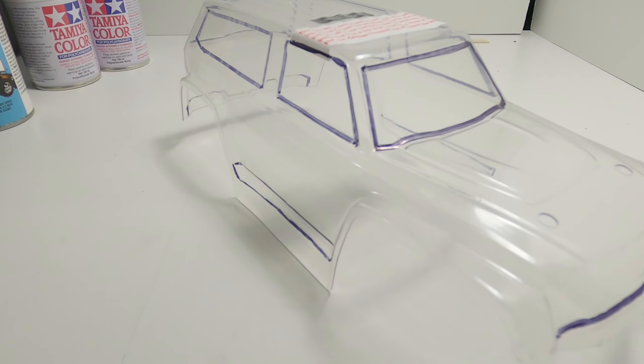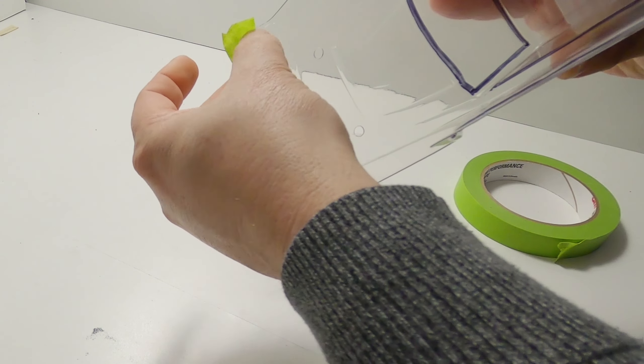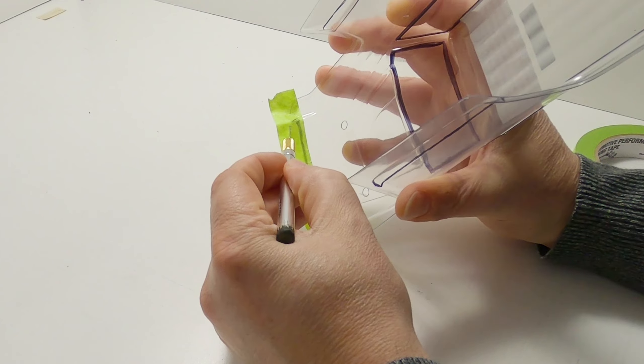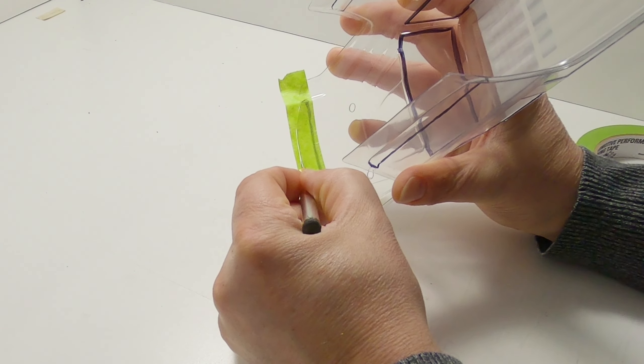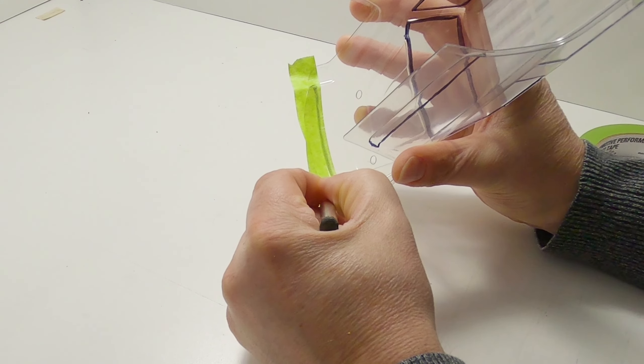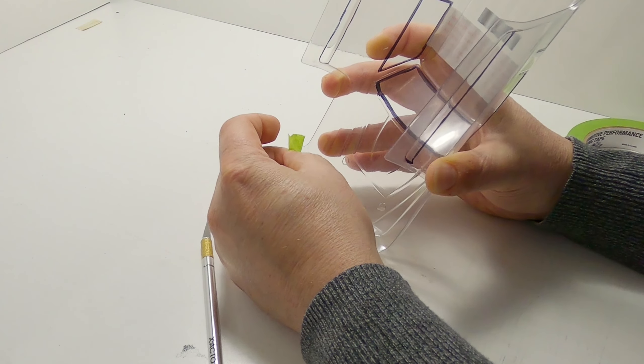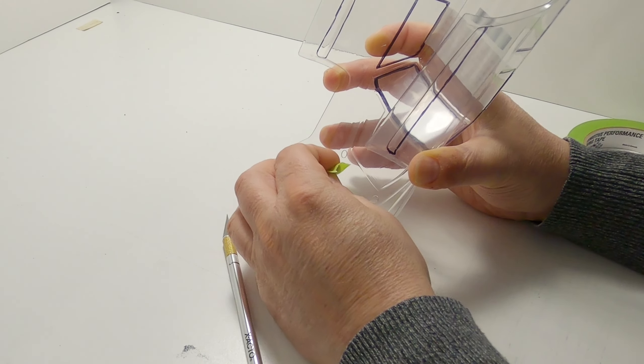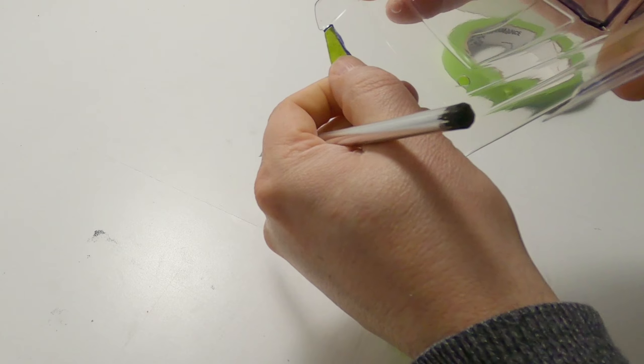Get the masking tape, completely cover the area, and now you can see the body lines we just drew. Very easily trace them with the razor blade and pull away the tape. Make sure the edges are down tight.